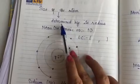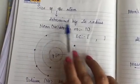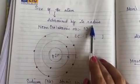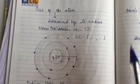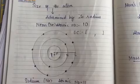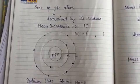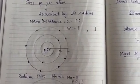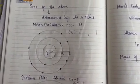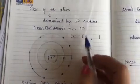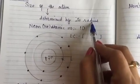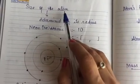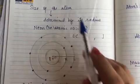Now, the size of the atom — how is the size of the atom determined? The size of the atom is determined by its radius. How do we know which atom is bigger and which atom is smaller? Because an atom is very small and we cannot see it.